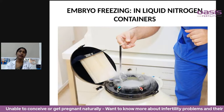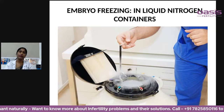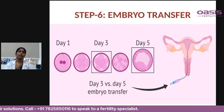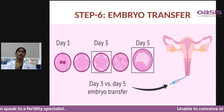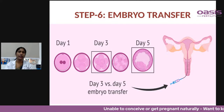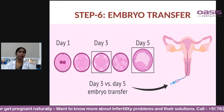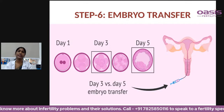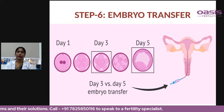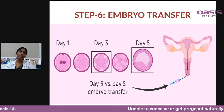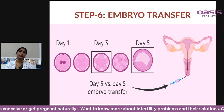Once the embryos are formed, embryo freezing is done — inside liquid nitrogen containers at minus 196 degrees Celsius. The final step is embryo transfer. Nowadays, we prefer day five or blastocyst embryo transfer, as blastocyst embryos have more potential to give pregnancy than day three embryos. Embryo transfer can be fresh — in the same cycle as egg collection — or frozen, where embryos from the same cycle are frozen and transferred in the next cycle after the uterus is prepared.